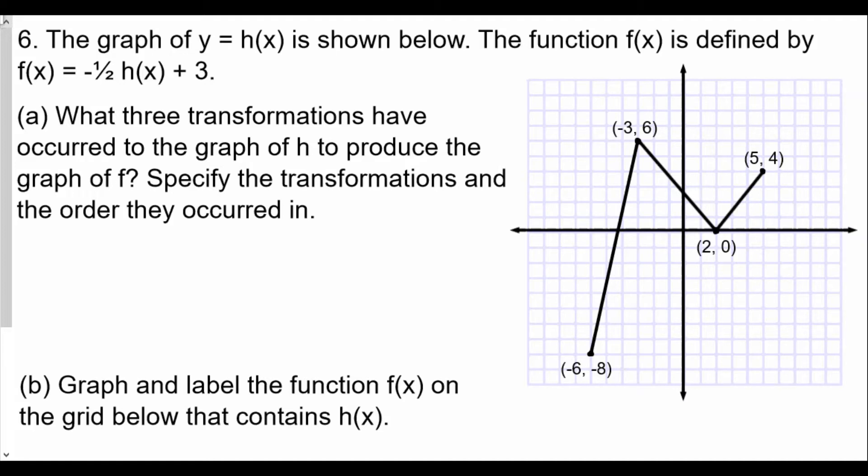The graph of y equals h of x is shown below. The function f of x is defined by negative 1 half of h of x plus 3. What three transformations have occurred to the graph of h to produce the graph of f? Specify transformations and the order they occurred in.